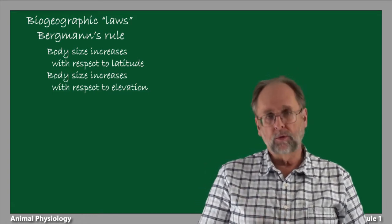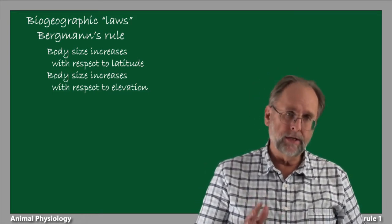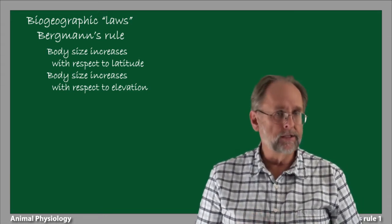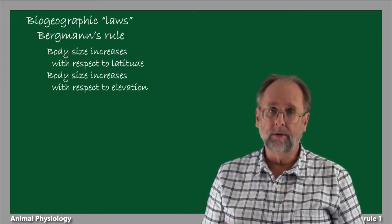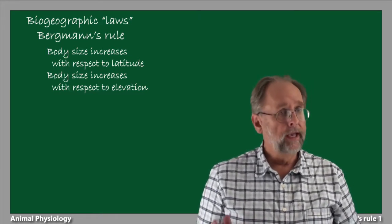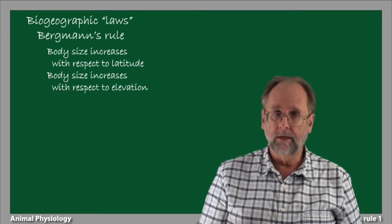Specifically, Bergman's Rule asserts that body size increases with respect to higher and higher latitude. That is, as one goes from the equatorial and tropical latitudes toward the Arctic and Antarctic latitudes, animals' body sizes will tend to increase.